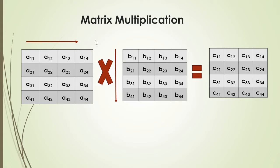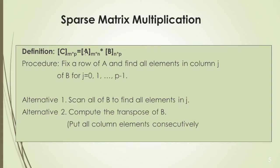Now if we have a sparse representation, we will modify the matrix multiplication algorithm. In the sparse matrix multiplication algorithm, A and B are input matrices and C is the resultant matrix. A is dimension M×N, B is dimension N×P, and the resultant matrix C is dimension M×P. We fix a row of A, find all elements in column J, and multiply corresponding elements. One way is to scan all of B to find elements in column J. Another way is to use the transpose of B to reduce searching.